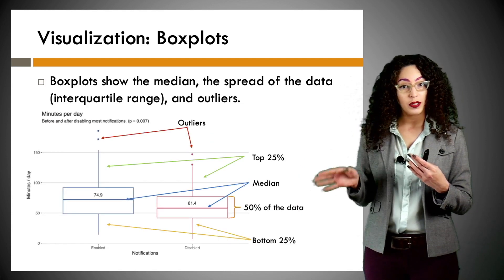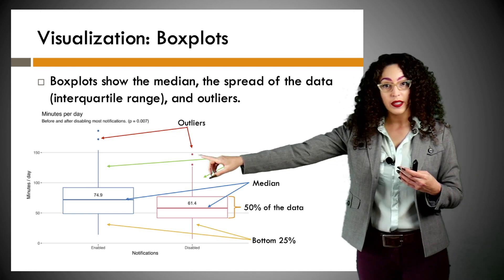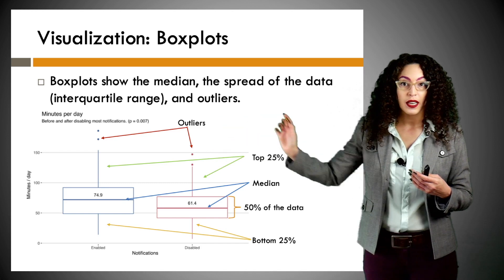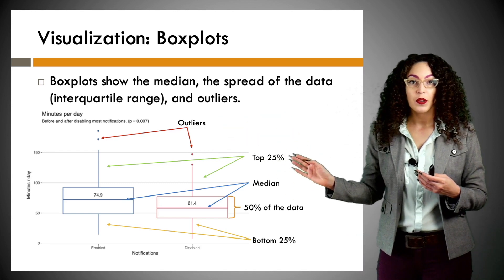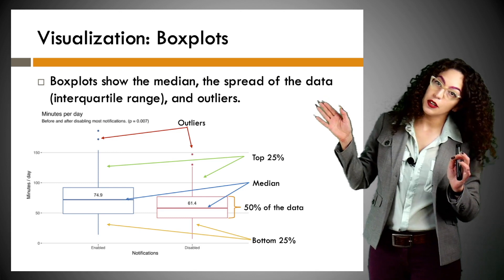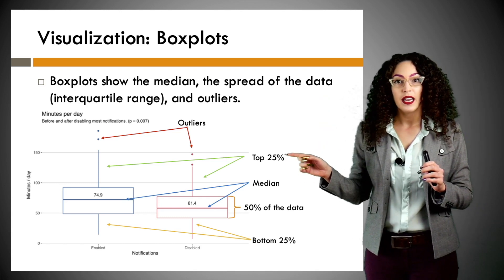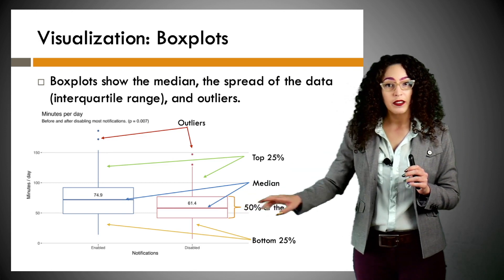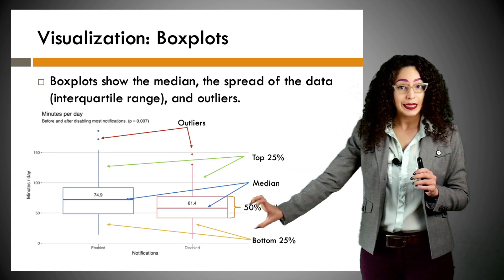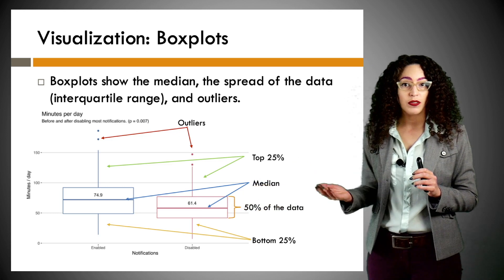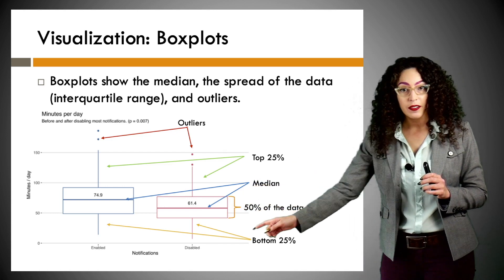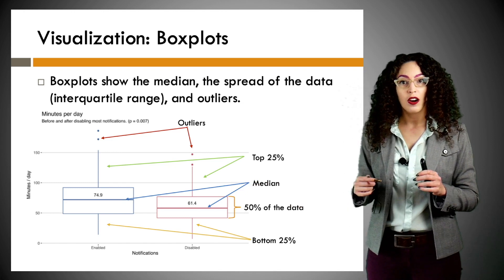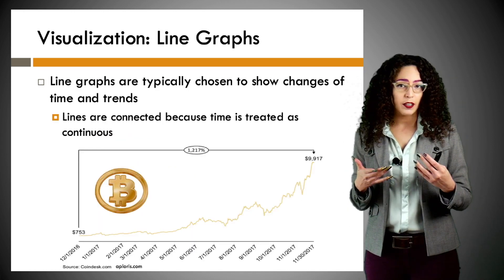Here's a refresher for what all the different points mean. Way out here, these dots that are kind of stragglers — we call those outliers. The first stick at the top, or the one furthest to the right if this was turned horizontally, are the top 25%. The line right in the middle of the box is the median. The whole box itself is the interquartile range, or 50% of the data, and the very bottom sticks are the bottom 25%.